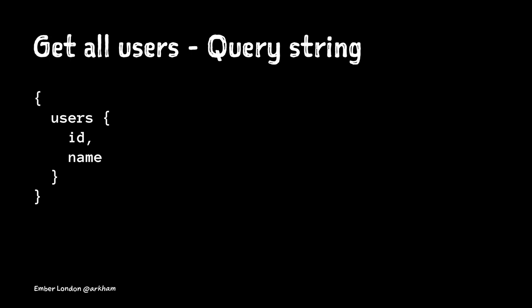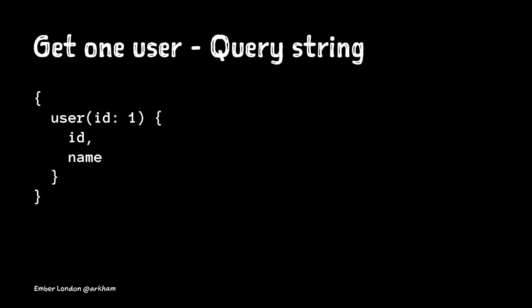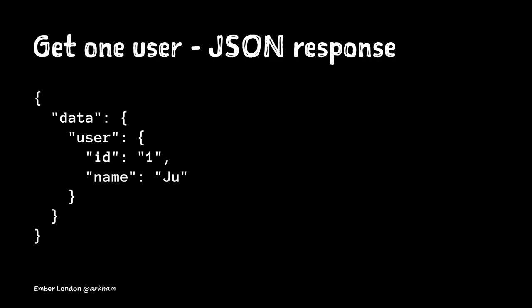I'm trying to fetch the users, and of those users I want the ID and the name. This is the result: I have data, there's users inside, and there are the fields I asked for from the GraphQL endpoint. We can also pass arguments — asking only for the user whose ID is 1 — and we still want the ID and the name. The GraphQL endpoint returns exactly that.